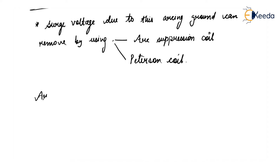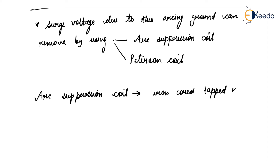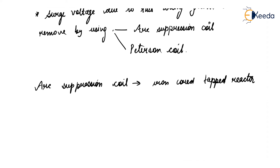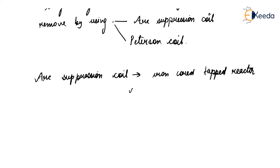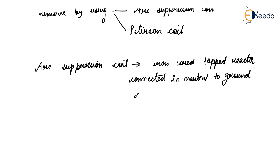The arc suppression coil has an iron core taped reactor connected between the neutral and ground.